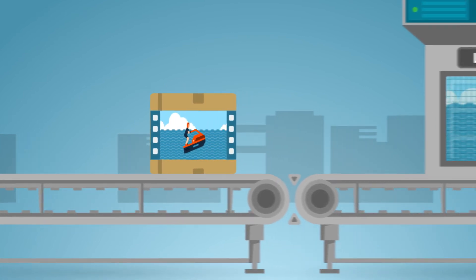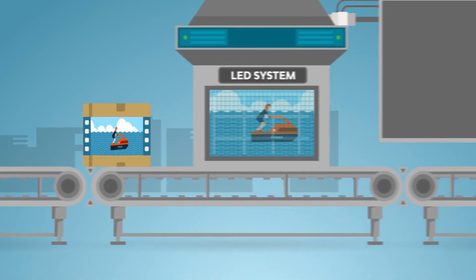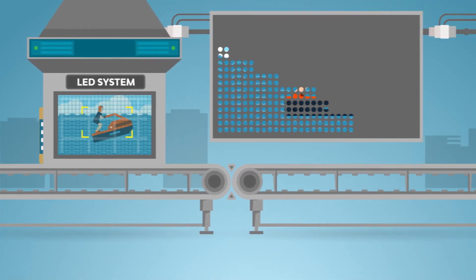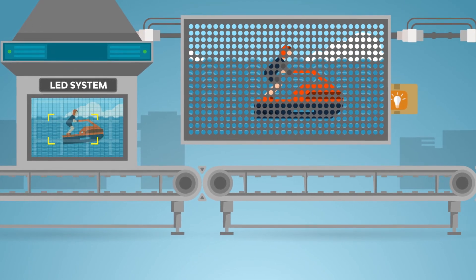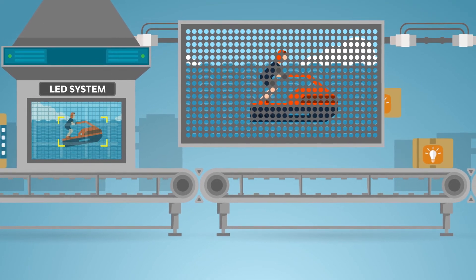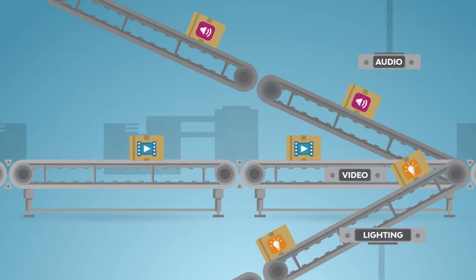Video can also be processed by an LED lighting system that breaks the video down and maps individual pixels to individual LED diodes across multiple lighting fixtures in an installation.